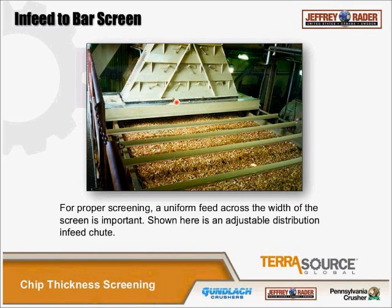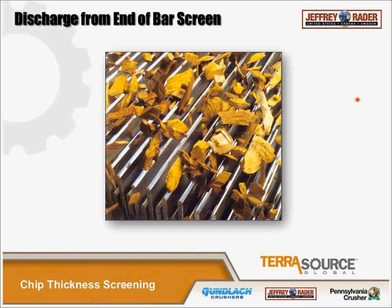This is a good picture of the chips coming off the end of the screen. These are half-inch bars, they're chamfered, and you can see many chips are in suspension because they bounce along. So there's a good opportunity for the accept-size chips to fall through, and by the same token the big chunky stuff goes off the end of the screen. So we remove the overthick chips.